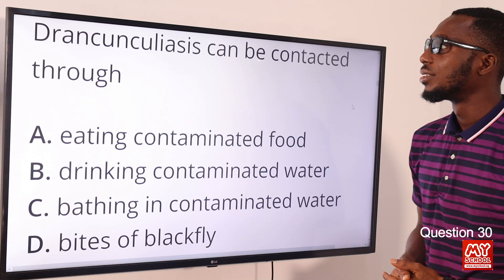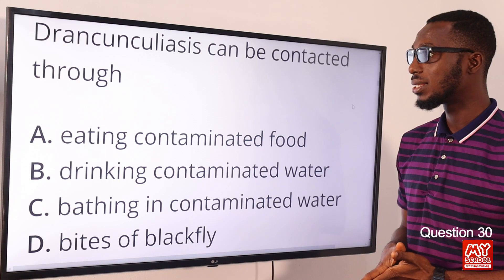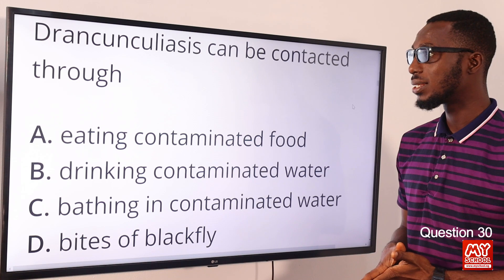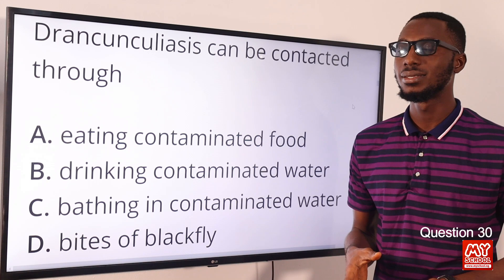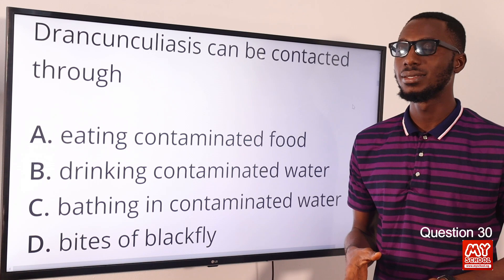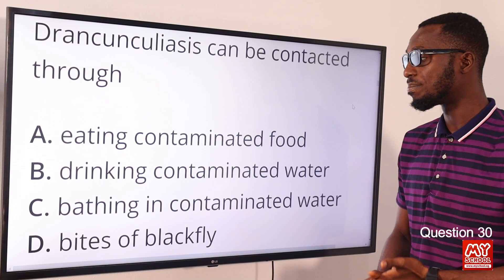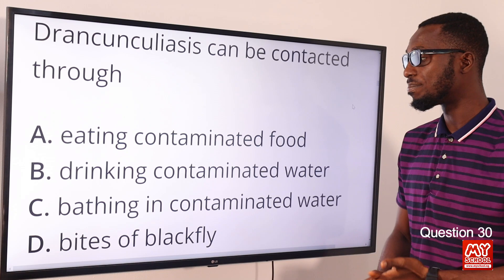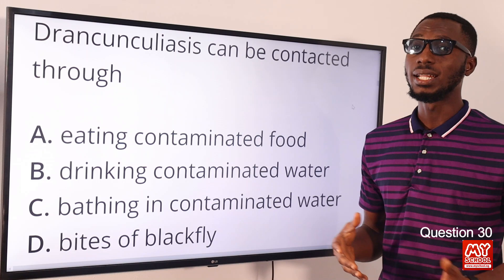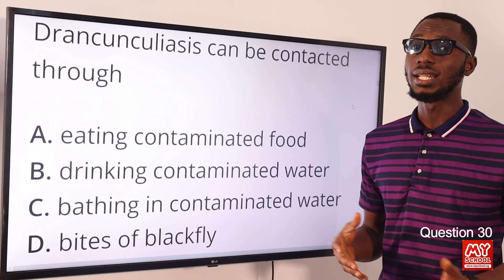Question 30: Dracunculosis can be contacted through drinking contaminated water containing an infected flea. It is also referred to as guinea worm disease and is caused by the parasite Dracunculus medinensis. When the worm wants to emerge, it creates a blister, then after 24 to 72 hours it comes out, causing several kinds of painful experiences. The correct option is option B.